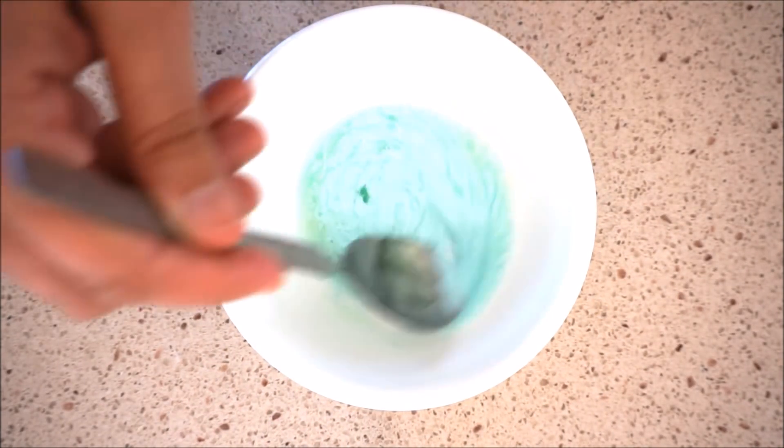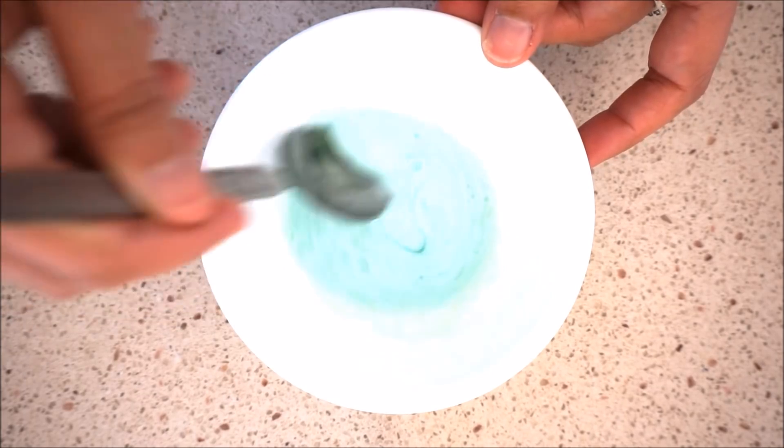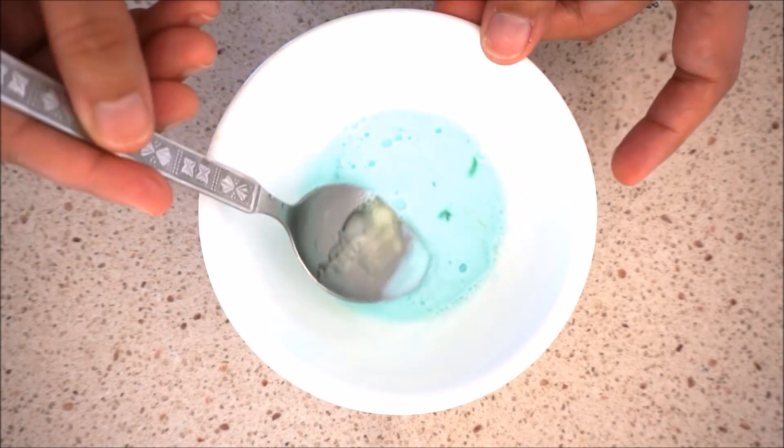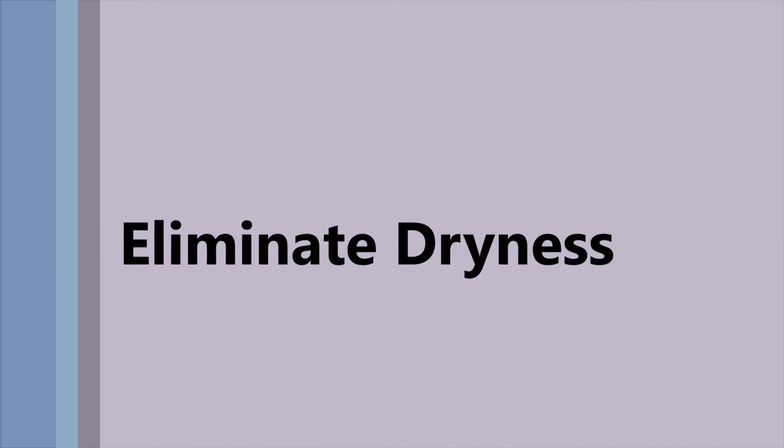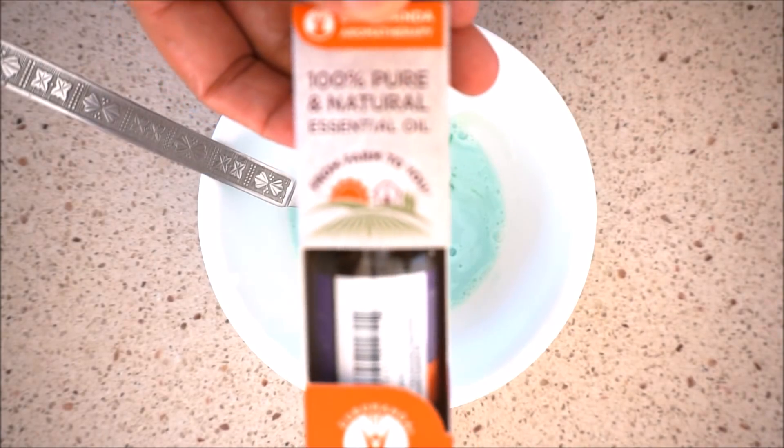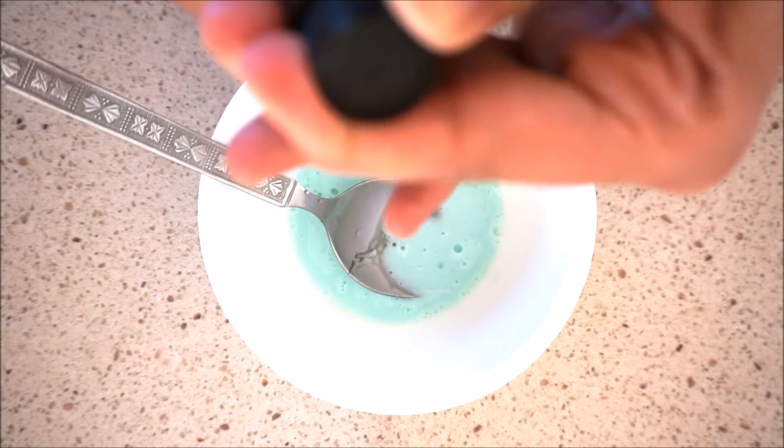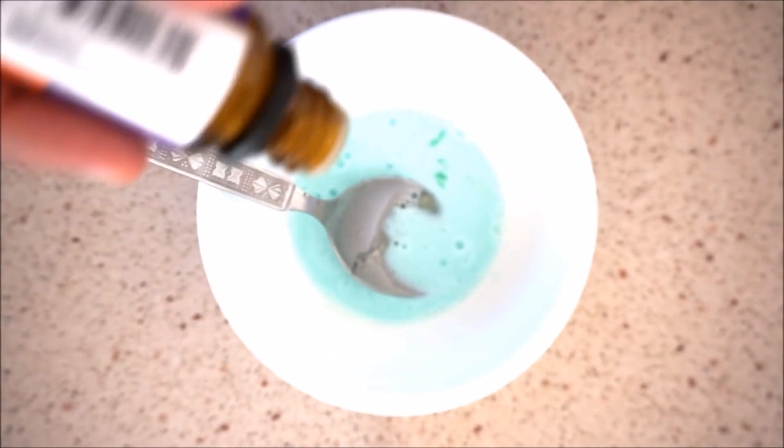Now if you have dry hair, then this is the remedy for you. For dry hair, you need essential oil. You can use any fragrant essential oil. Just add two drops of essential oil to the shampoo.